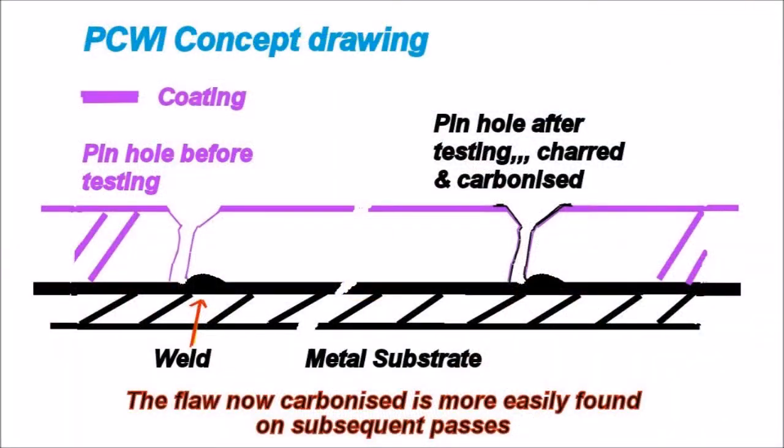We need to understand one thing. Once a pinhole has been tested and found, it chars and carbonizes. That means from the substrate, you get a black char which goes to the top of the coating. So it is very easy to find the second time and on subsequent passes. It's the initial flaw that's hard to find.